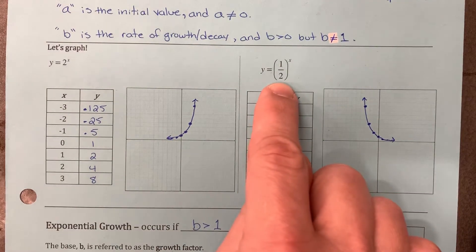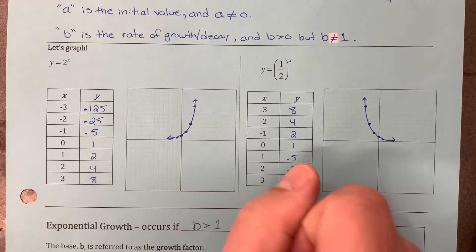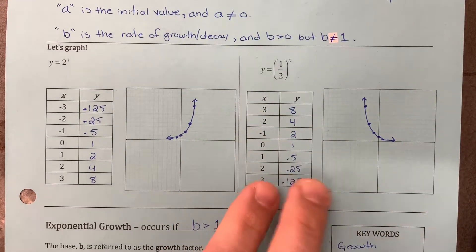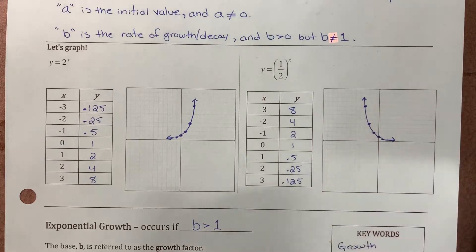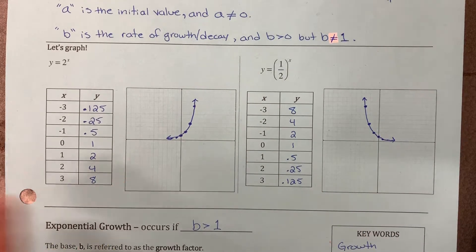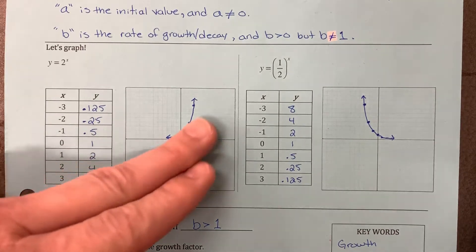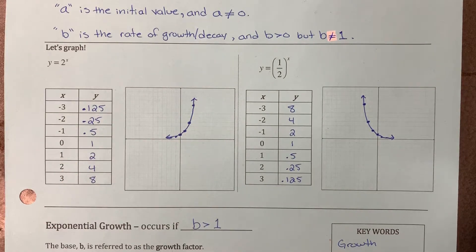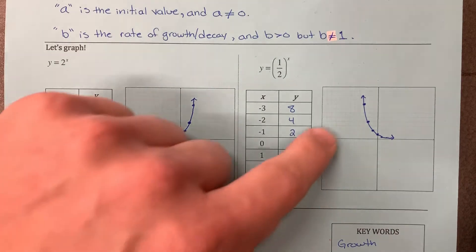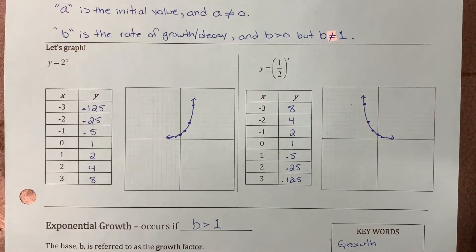Same thing here, you can type in this equation in the y equals screen, go to your table of values, get your list of numbers, plot those points, make your graph. This is what an exponential function looks like on a graph. This, as it's going up, represents exponential growth. Where this one, as it's coming down, represents exponential decay.